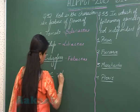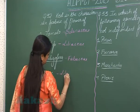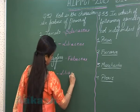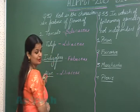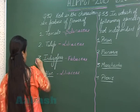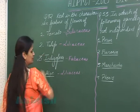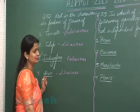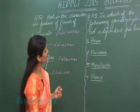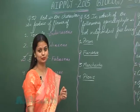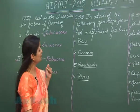Aloe belongs to Liliaceae family. So the right option is option number 3, which is Indigofera.